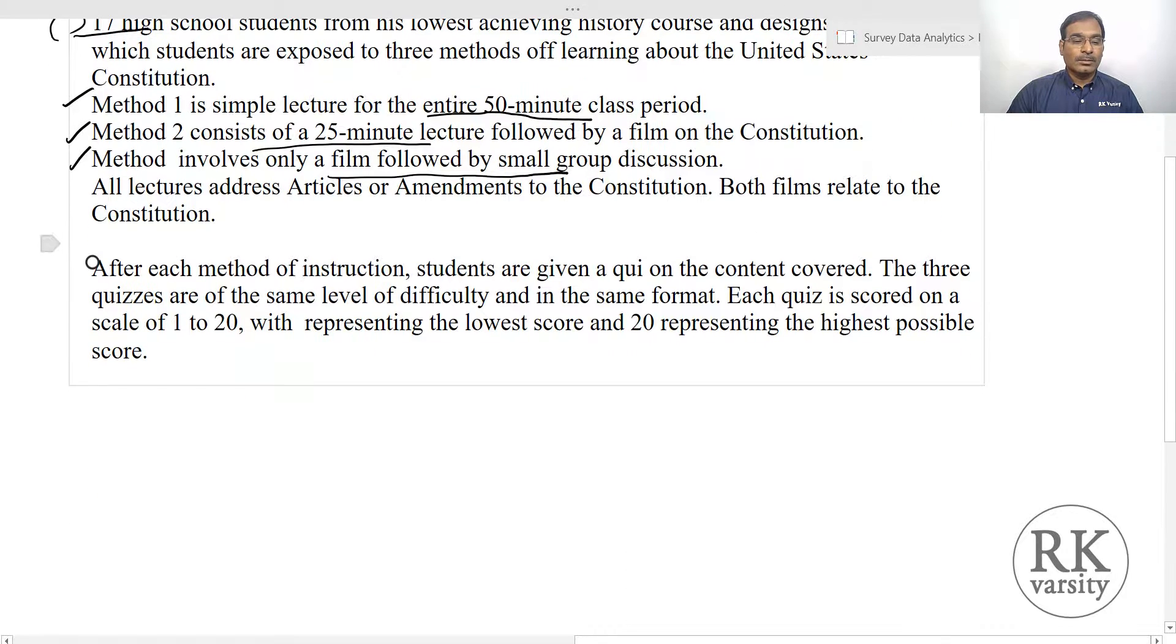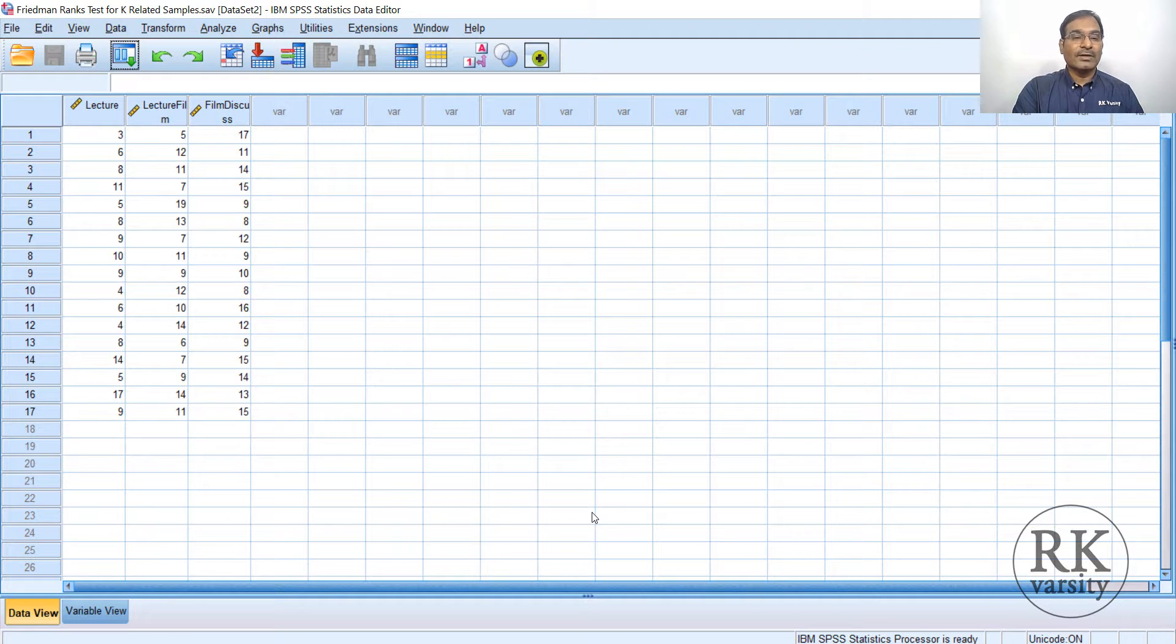Then Method 3 consists of a film followed by a small group discussion. Now after the analysis, the instructor rated the students by giving a quiz scored on a scale of 1 to 20. So the data for this is presented in SPSS. I'll show you the SPSS data sheet here.